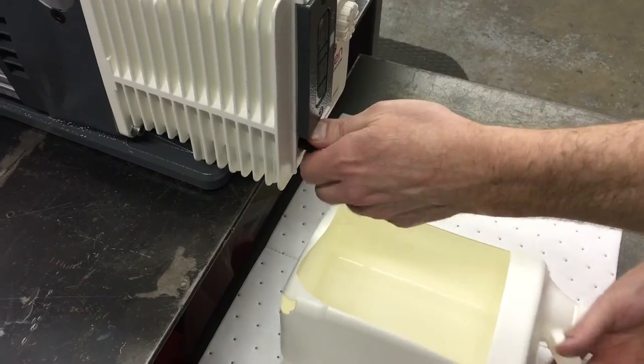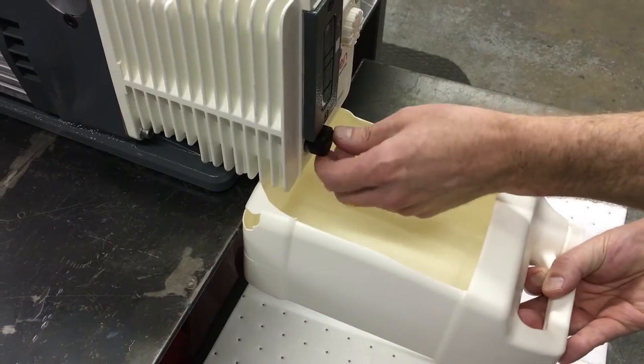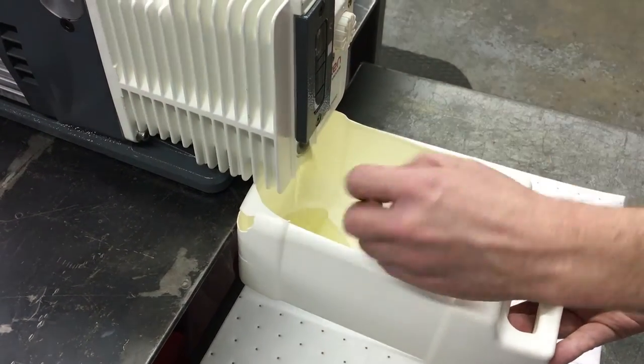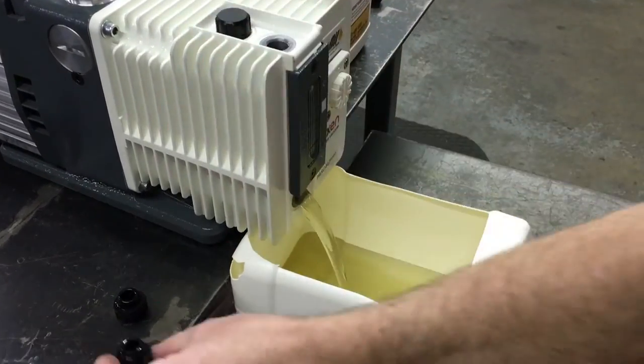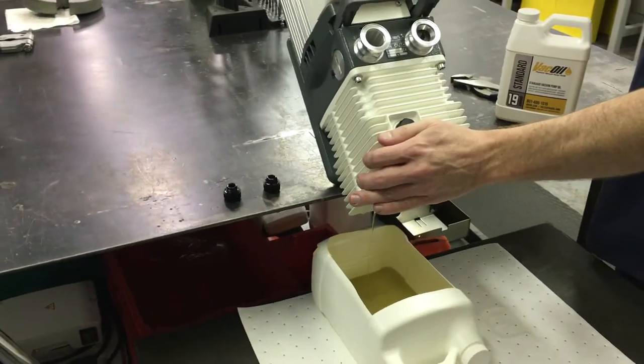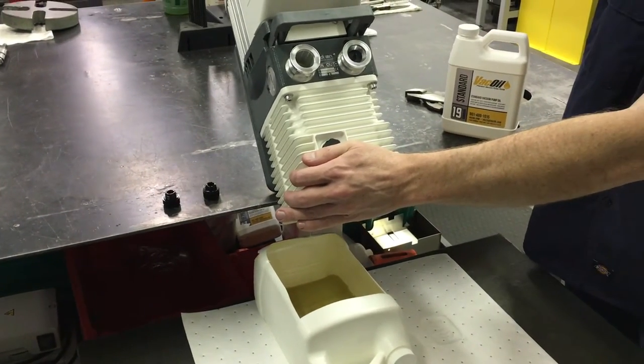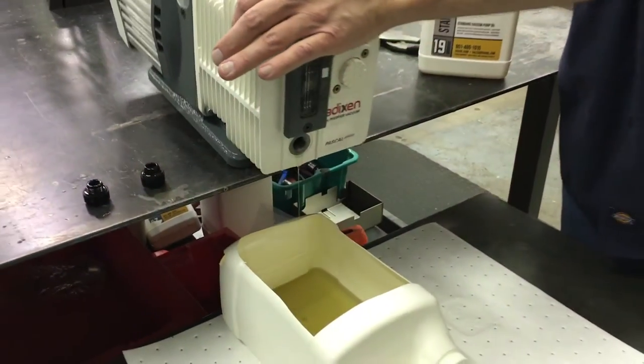To drain the oil use the channel lock wrench to loosen and remove the drain plug. After the drain plug is removed unscrew the oil fill plug for faster draining. Remember to tip the pump to remove as much oil as possible.